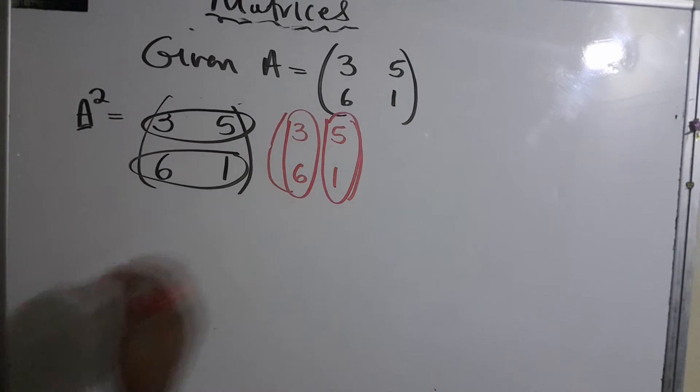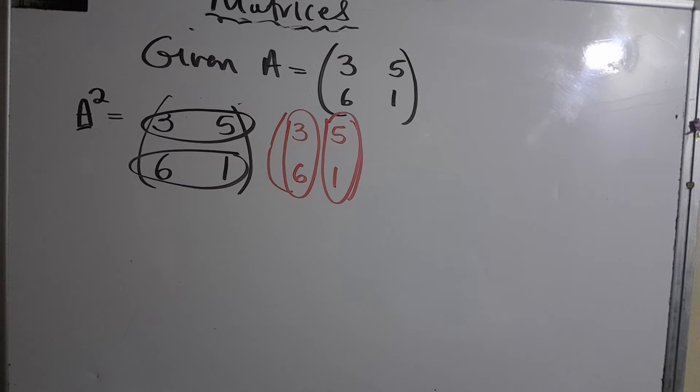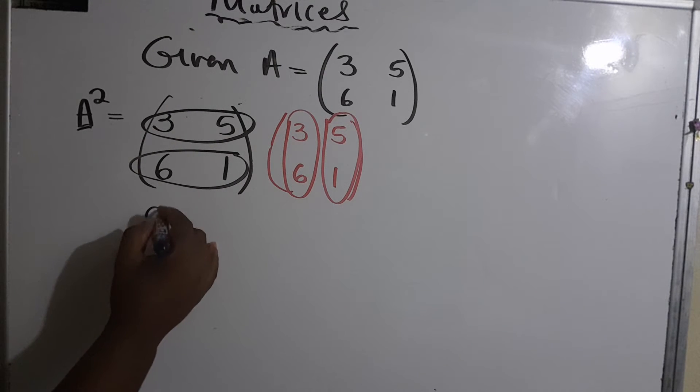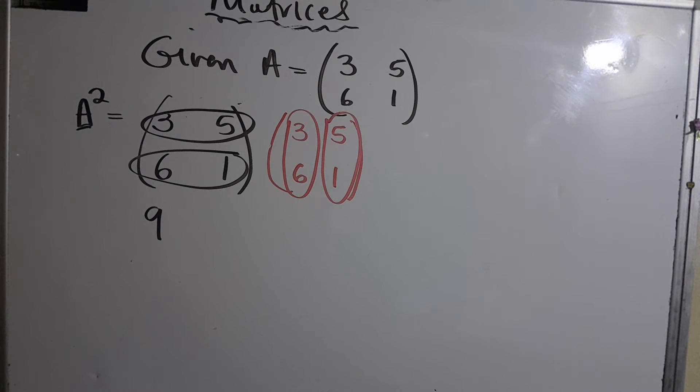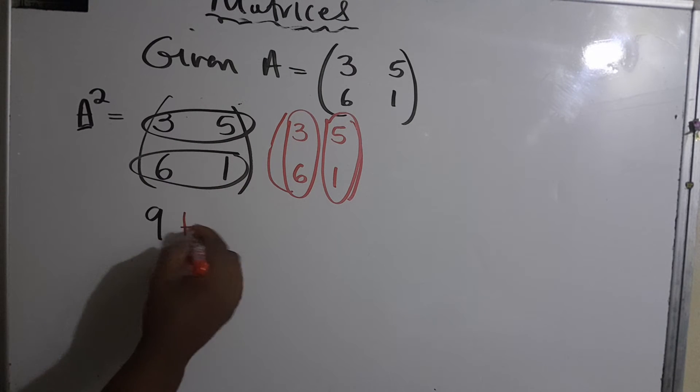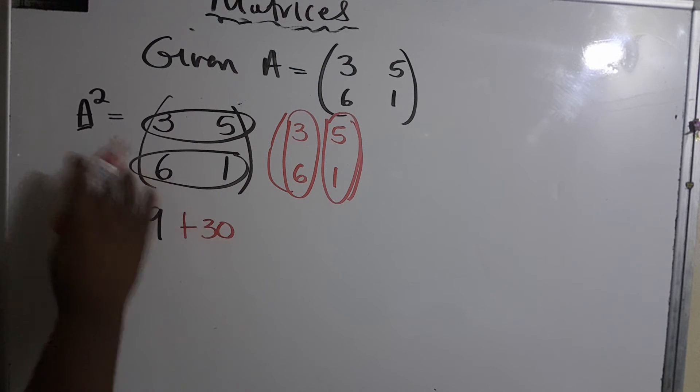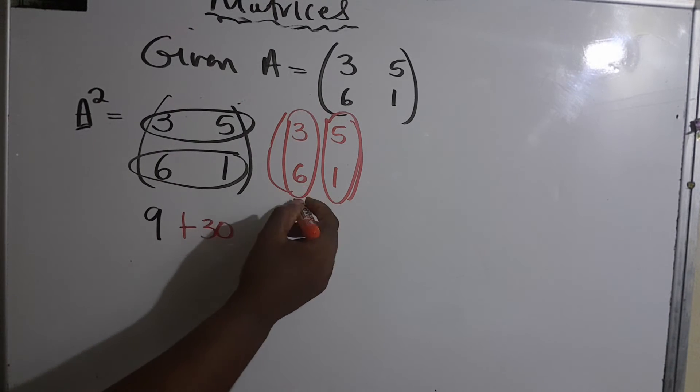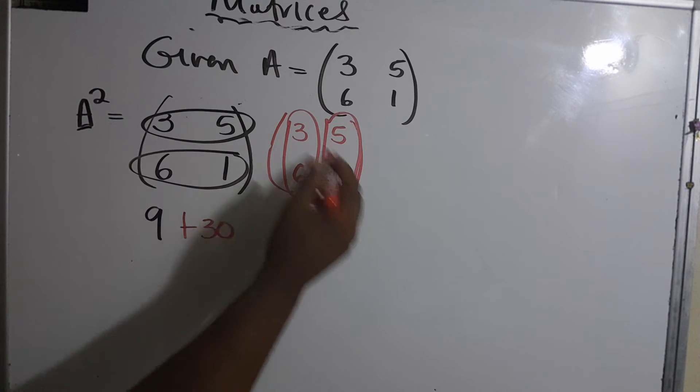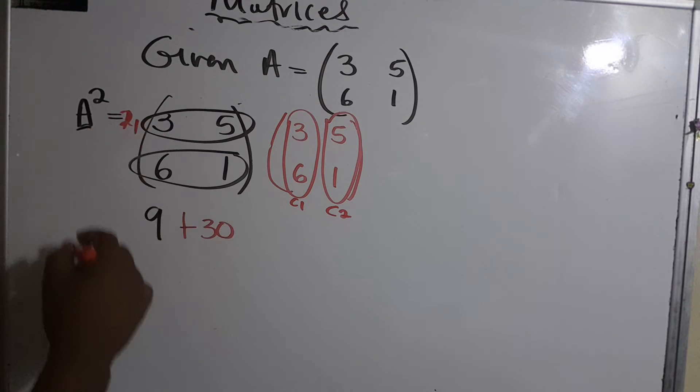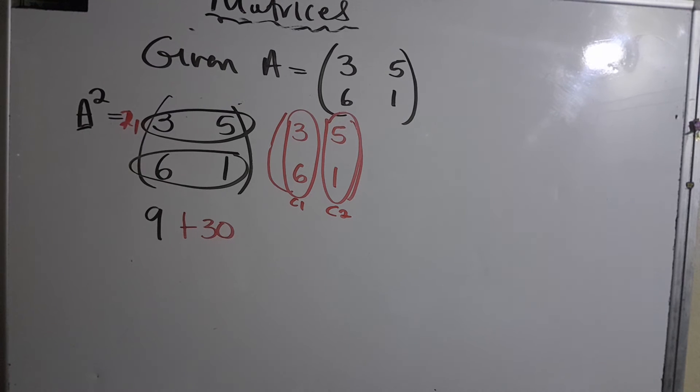Three times three, that is 9. Five times six is 30. So that's the first row times the first column. Next you move on to the second column: three times five, that would be 15. Five times one is 5. Finished row one.